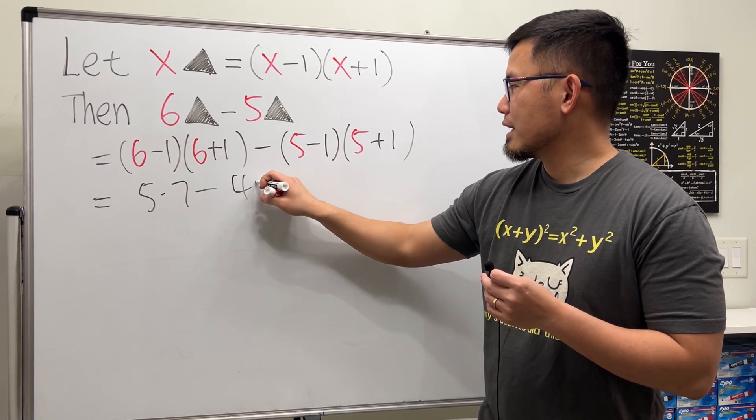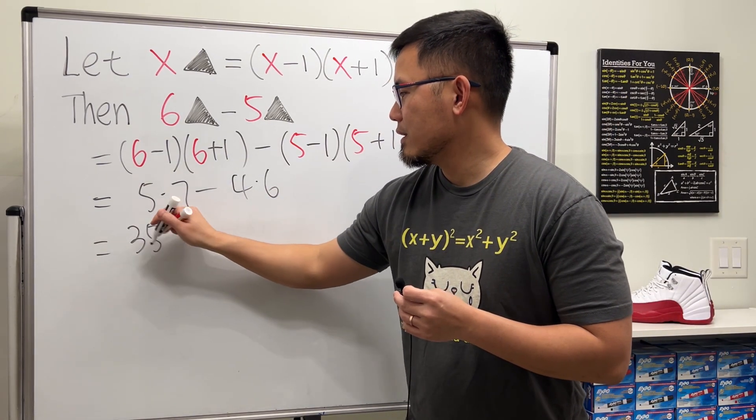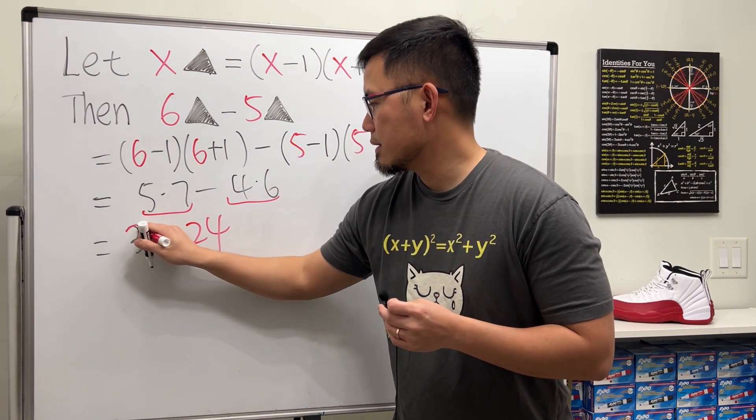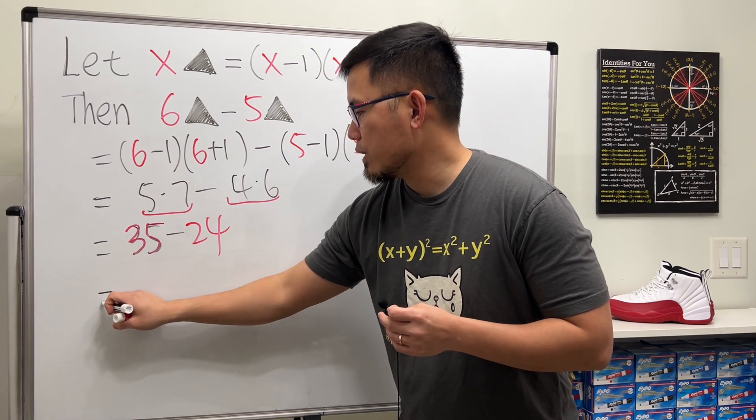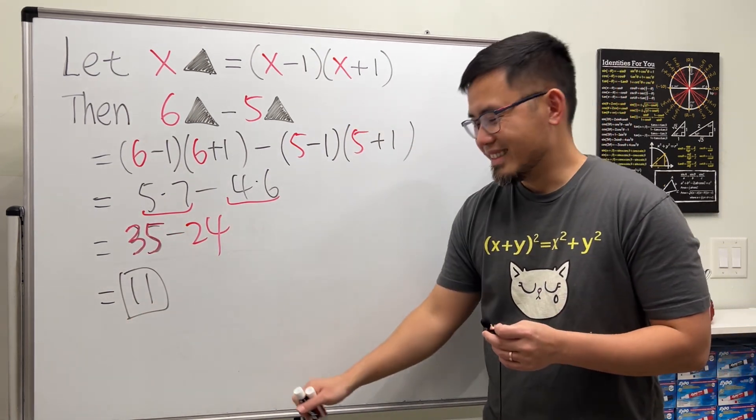Now let's work this out. This is 5 times 7, and then minus 4 times 6, so 35 minus 24.